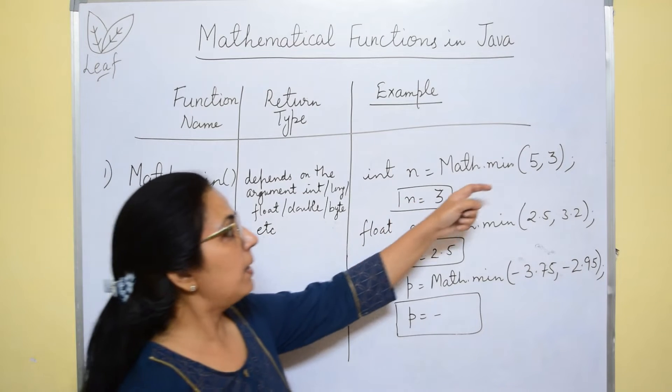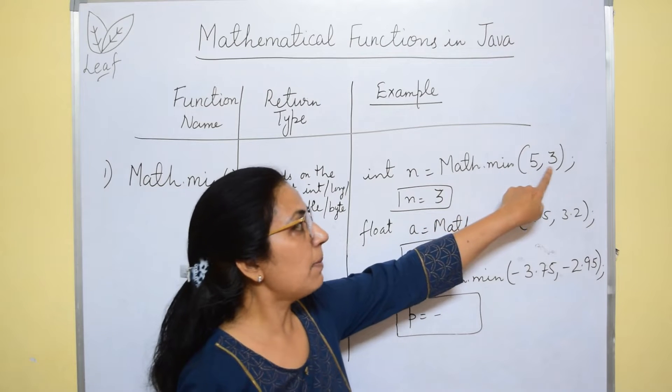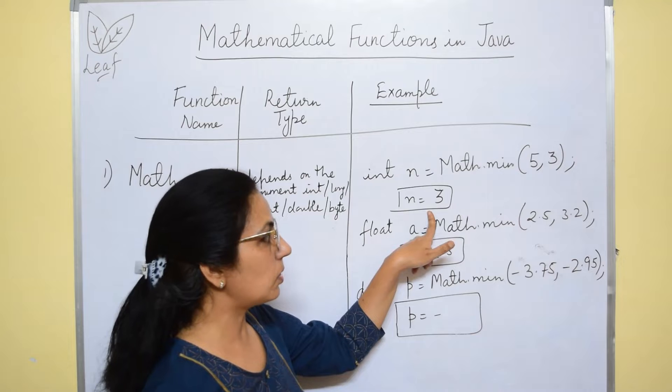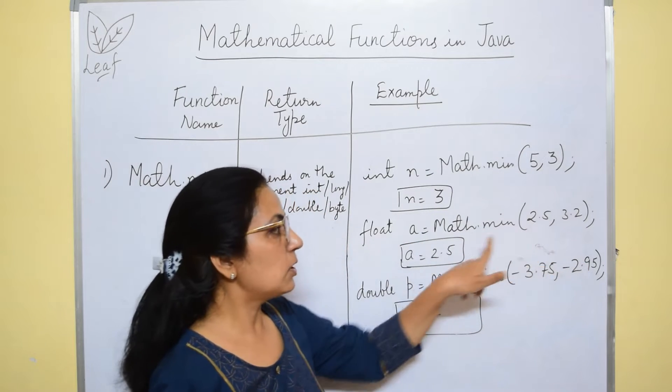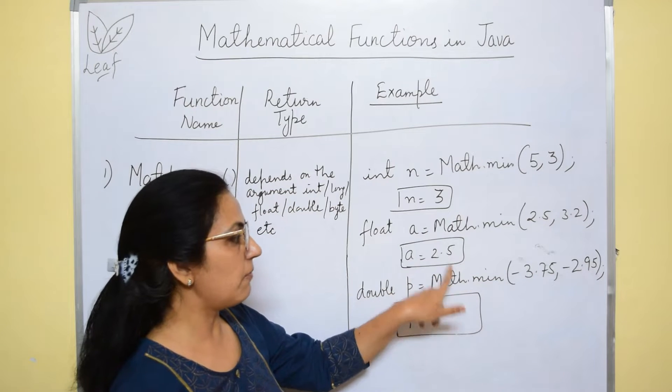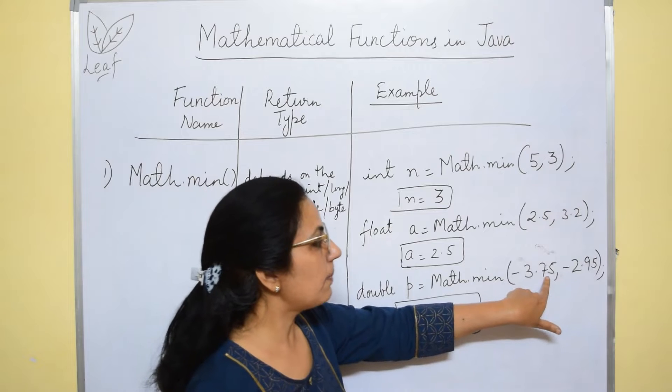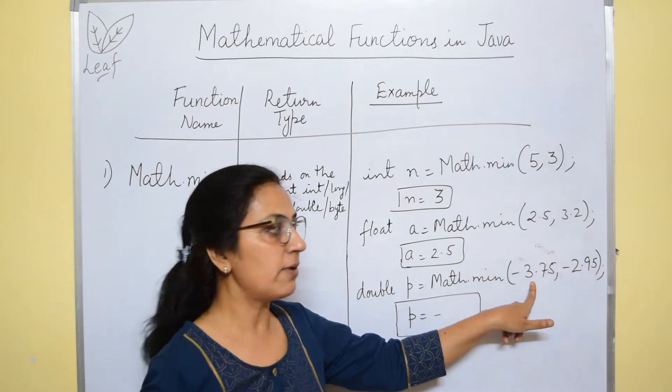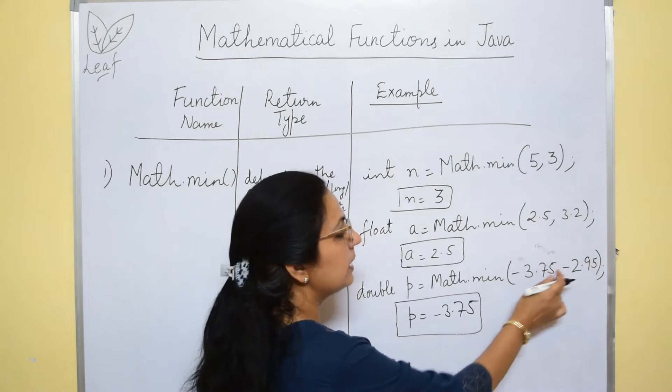If let's see example, Math.min(5, 3), the minimum of these two is 3, so n will store the value 3. Similarly 2.5, 3.2 out of these two, 2.5 is the minimum value. And if we take negative numbers -3.75 and -2.95, -3.75 is the smaller value out of these two values.